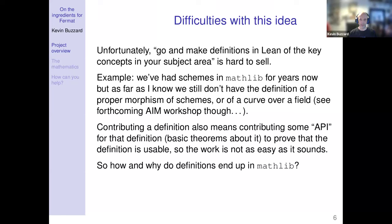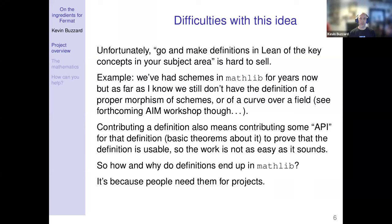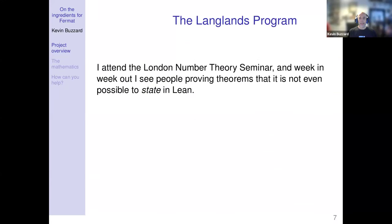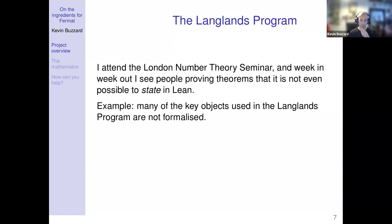In Lean's Mathlib, definitions end up there because people need them for projects. People choose targets — theorems in the literature — and work towards proving those theorems, and that way they're forced to make definitions and prove basic things. This is in practice how many things end up in the library. I go to the London number theory seminar week in, week out, and I see people proving theorems that currently we can't even state using Lean's Maths Library, because the definitions are missing.